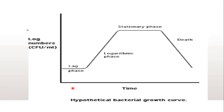Before going to the answer, we will first see the phases of bacterial growth. The first is lag phase, another is logarithmic phase — that is log phase, which is also known as exponential phase. Third is stationary phase, and the last one is death phase.